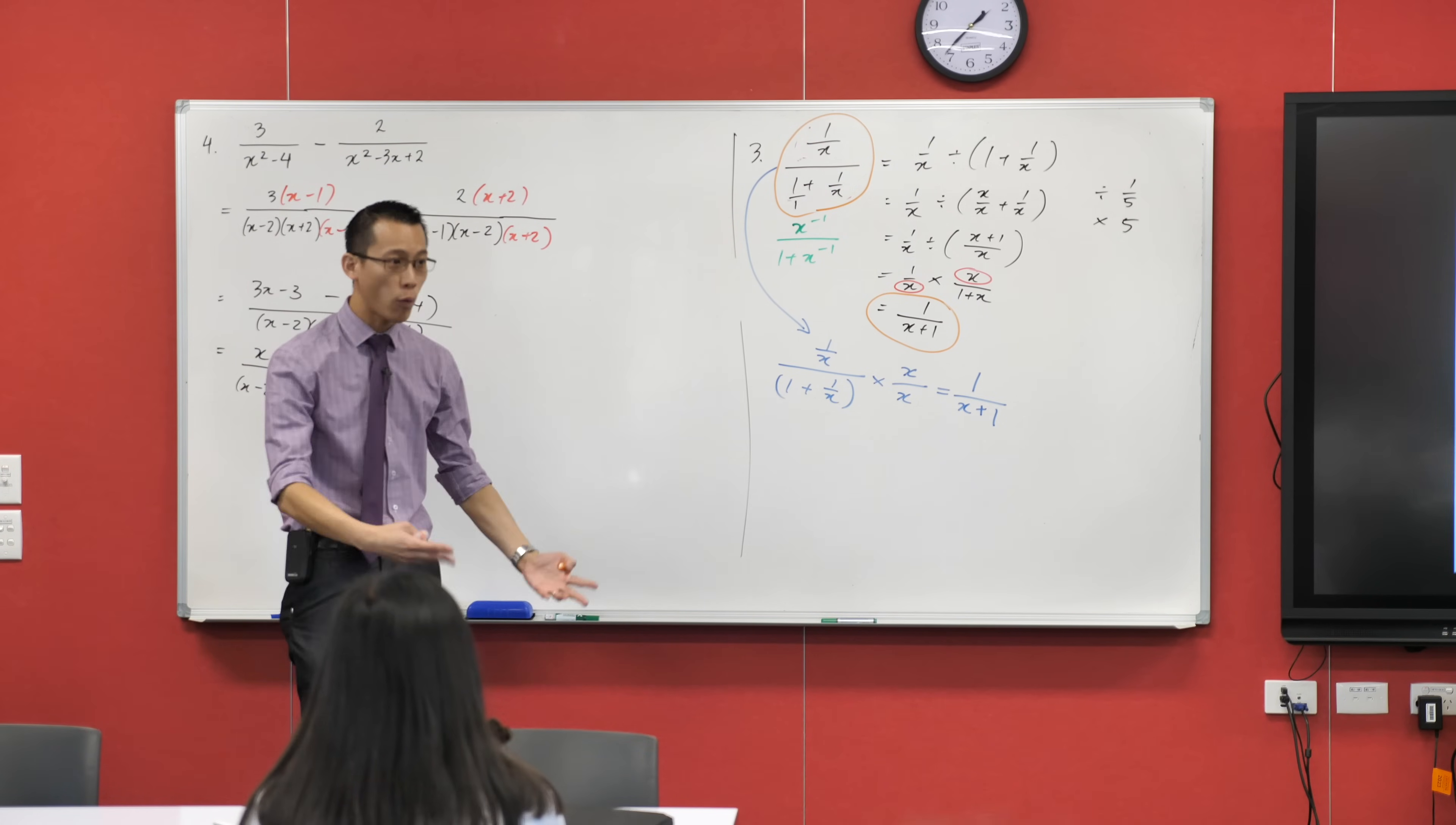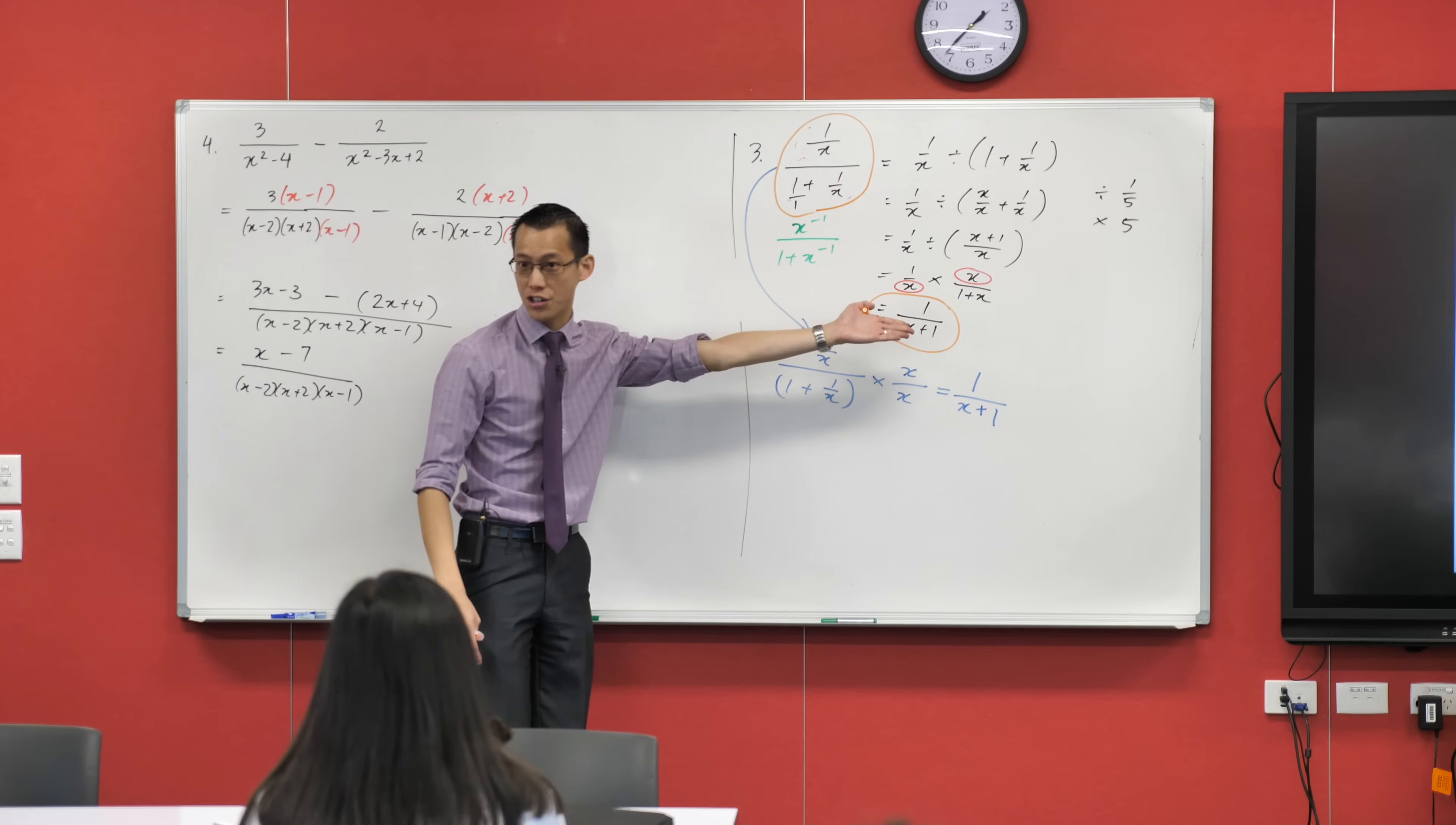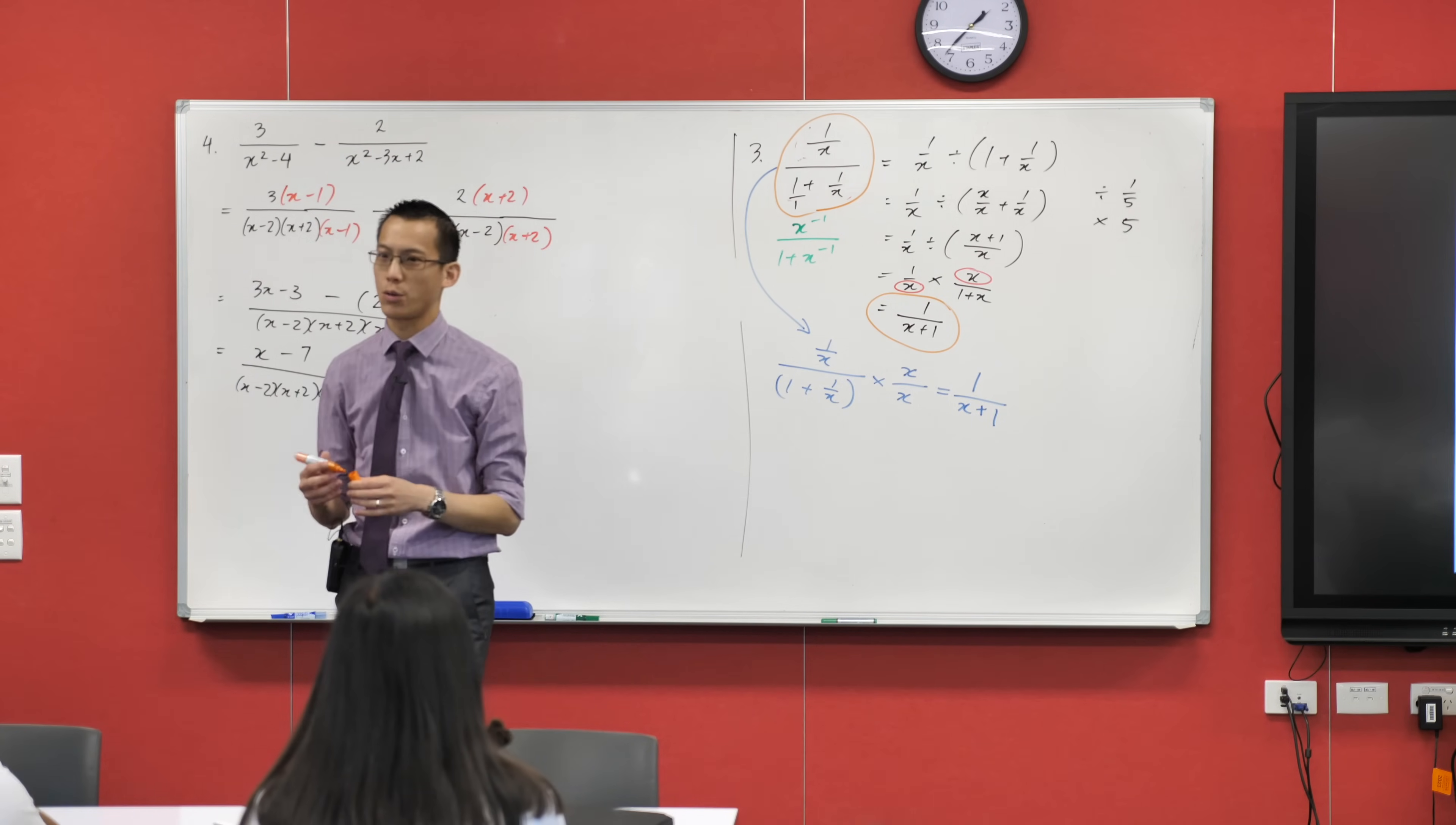Now, this is mostly okay except sometimes with particular values you can break things down. You can make things stop working. For example, have a look at this last expression, the last one I've written down. Can you tell me, because x can be equal to anything, right?